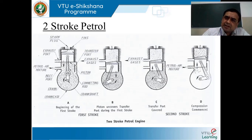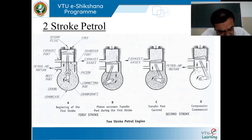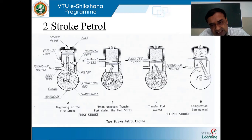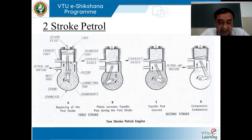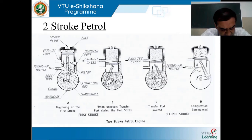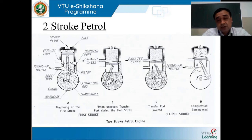Then we take up the admission of charge. When we consider four-stroke engines, the charge is directly admitted into the engine cylinder during the suction stroke. But when we take the reference of two-stroke engines, the charge is first admitted into the hermetically sealed crankcase and then transferred to the engine cylinder. Next, when we take the reference of exhaust gases in four-stroke engines, the exhaust gases are driven out through the outlet by the piston during the exhaust stroke.